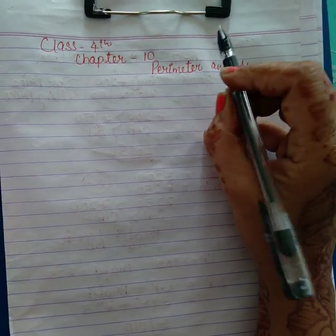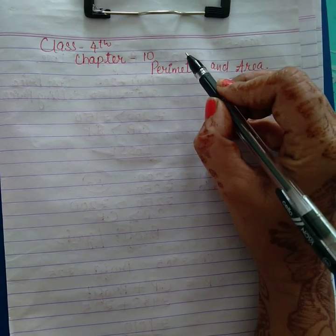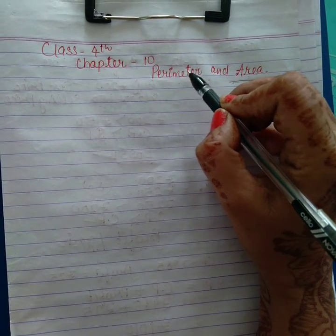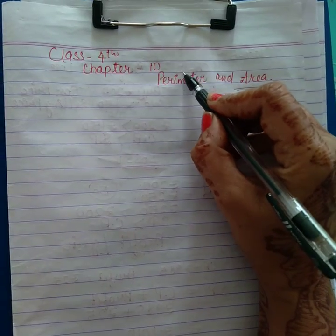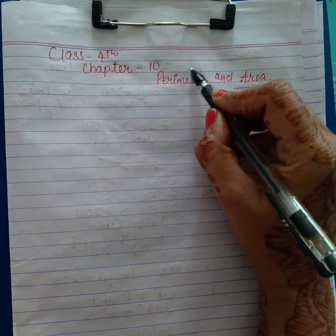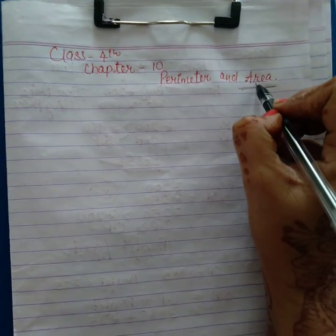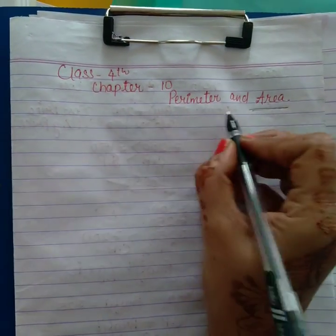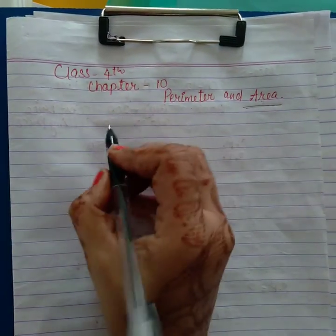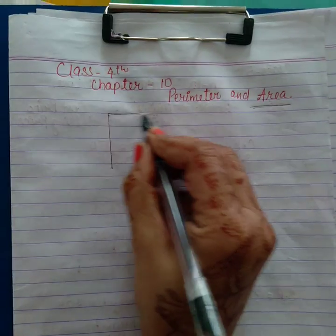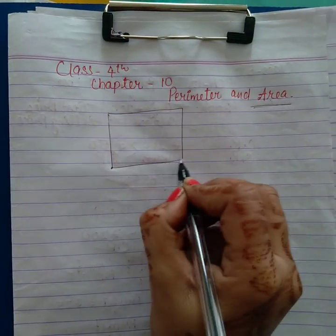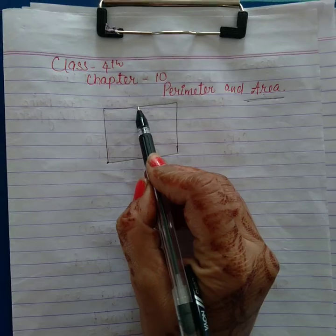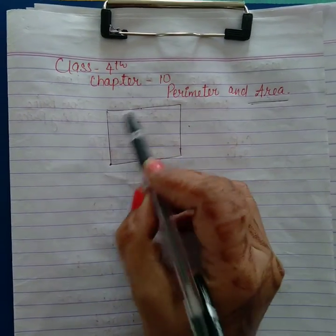In my last video, we already discussed about the perimeter — how to calculate the perimeter. In the last video, I already told you. Now we are going to start about the area. Here is the diagram. That is what the perimeter is — the sum of all sides.